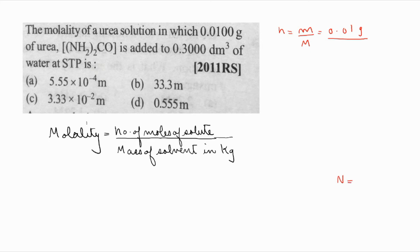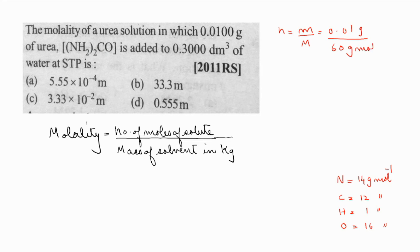How can you calculate the molar mass of urea? Molar mass of nitrogen = 14 g/mol, carbon = 12 g/mol, hydrogen = 1 g/mol, and oxygen = 16 g/mol. Using the molecular formula of urea, add all these together and you get the molar mass as 60 g/mol. The grams cancel, giving the number of moles as 1.66 × 10⁻⁴ mol.